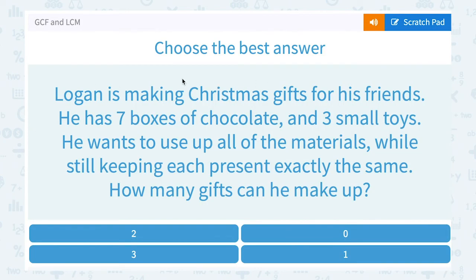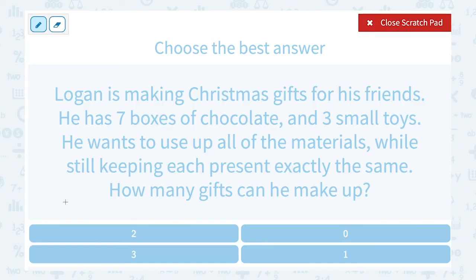Logan is making Christmas gifts for his friends. He has 7 boxes of chocolate and 3 small toys. He wants to use up all of the materials while still keeping each present exactly the same. How many gifts can he make? This is a greatest common factor problem: 7 and 3 both need to divide evenly by the number of gifts, and we want to know the most presents he can make.